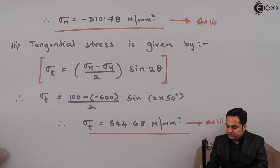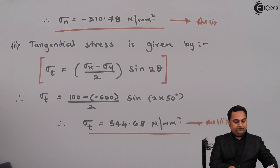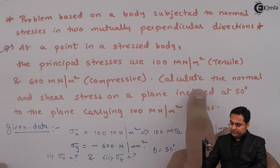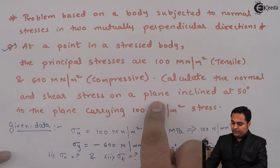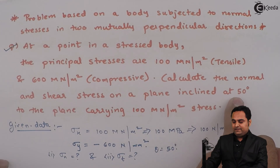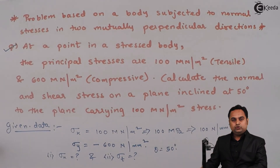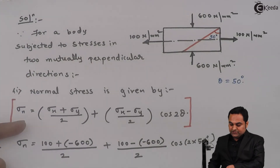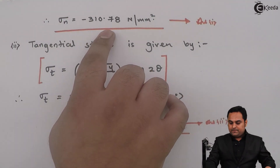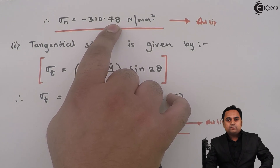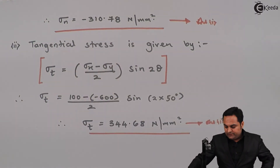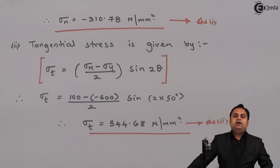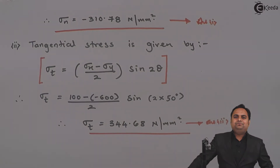That is the second answer. So looking at the question, we were asked to calculate the normal and shear stress on a plane inclined at 50 degrees — the oblique plane. On that oblique plane, the normal stress is minus 310.78 Newton per mm square and the tangential stress is 344.68 Newton per mm square. With this we complete the problem.